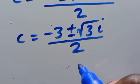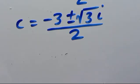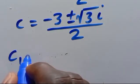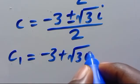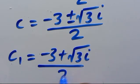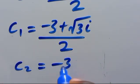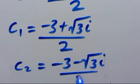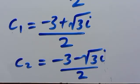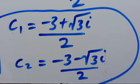Therefore, c₁ equals (−3 + i√3) / 2, and c₂ equals (−3 − i√3) / 2. These are the two values of c.